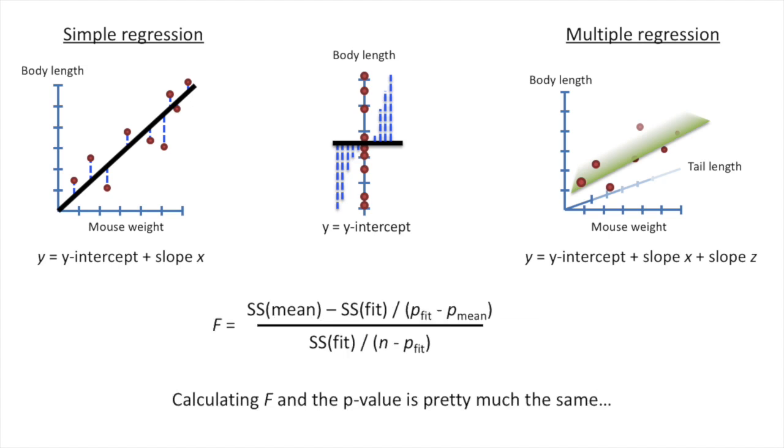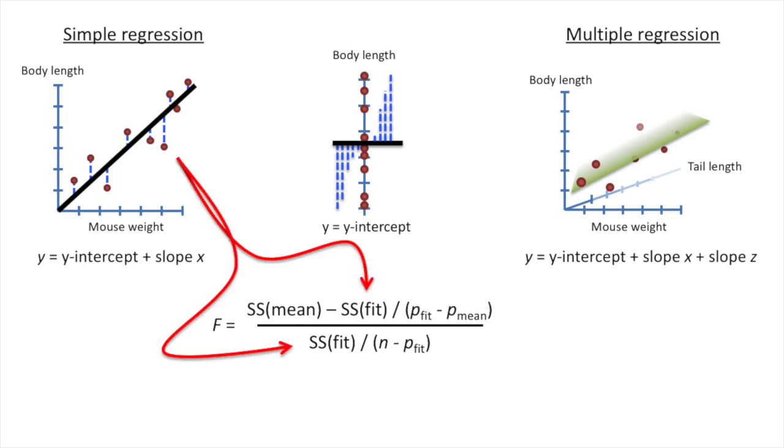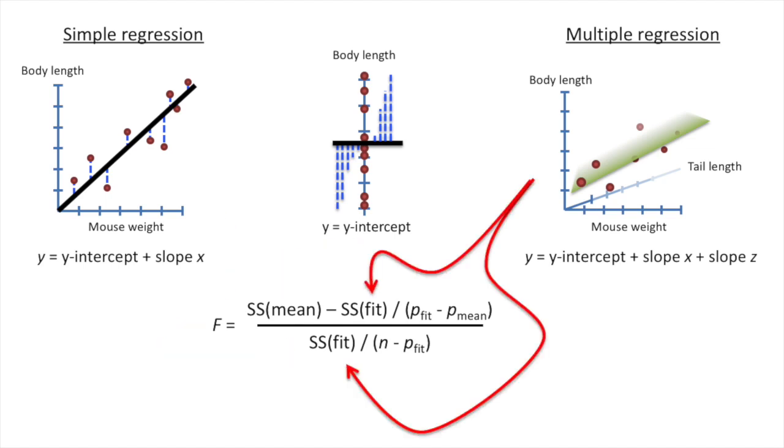Now we want to calculate a p-value for our r-squared. Calculating f and the p-value is pretty much the same. You plug in the sums of squares around the fit, and then you plug in the sums of squares around the mean.